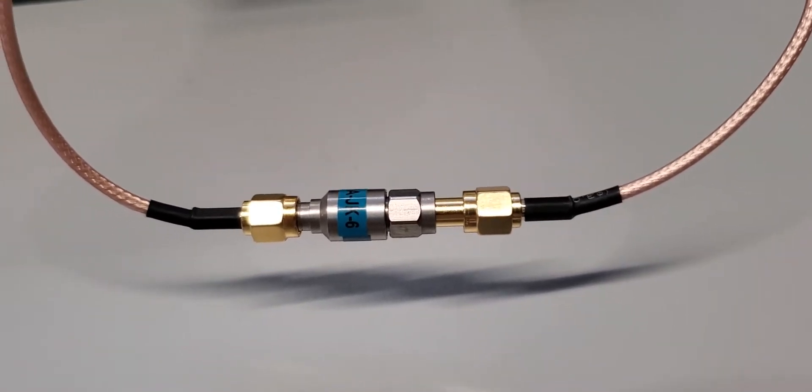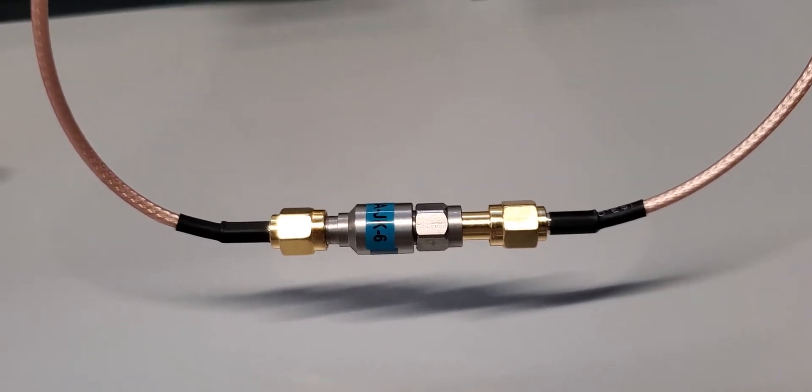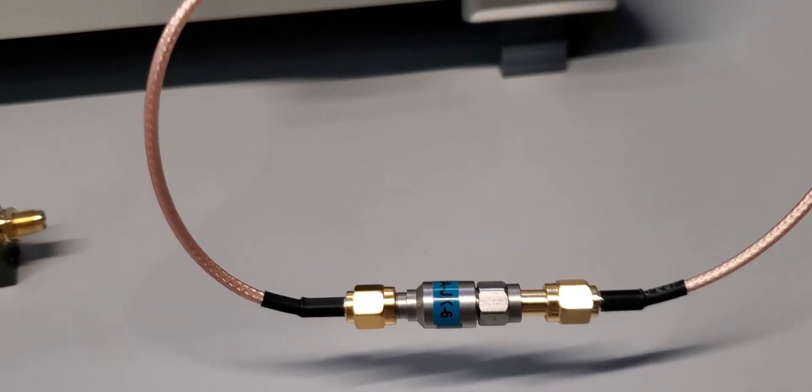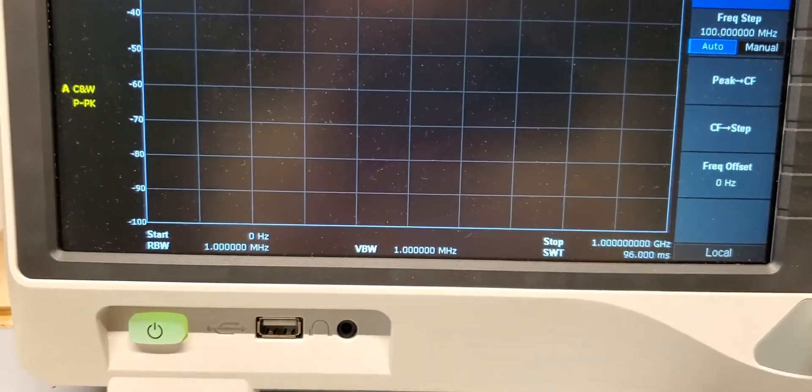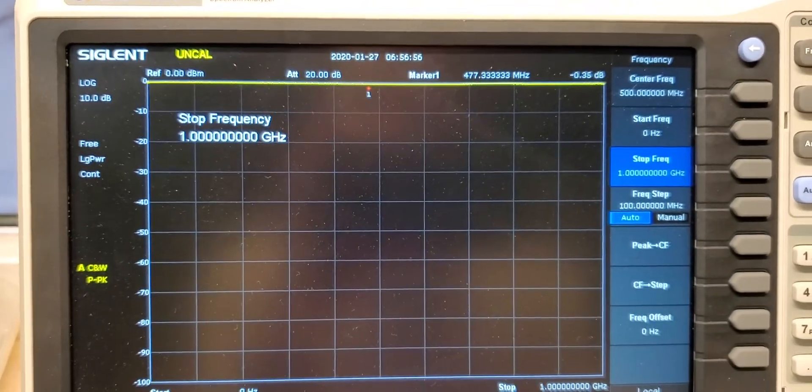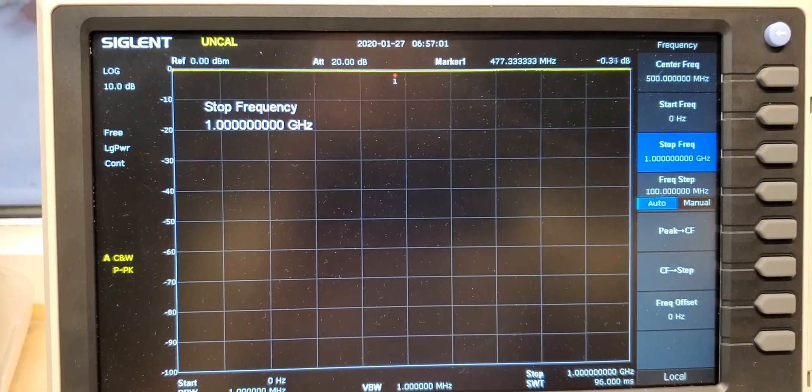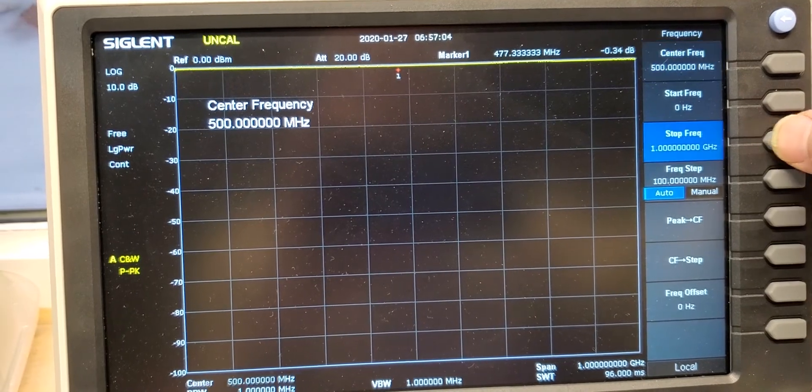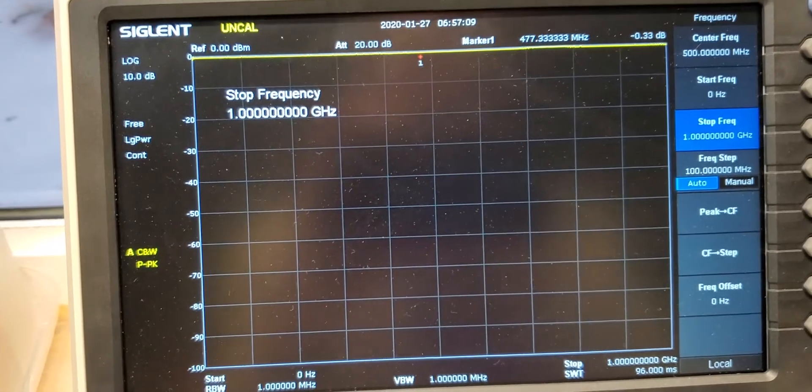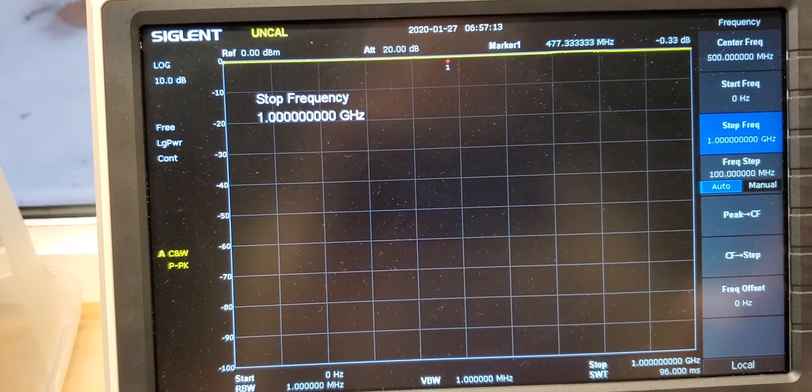So here we have the DC block in line. I did check out with the multimeter, it actually does block DC. The multimeter didn't have a connection through on both of those ones. So again our obligatory 0 to 1 gig, and we have a perfectly straight line. We really want to zoom in on the frequency a little bit more, probably down on the bottom range where it blocks the DC.